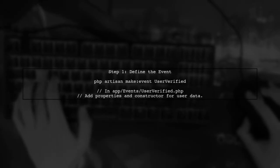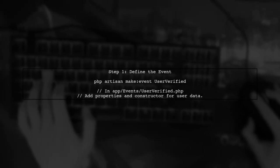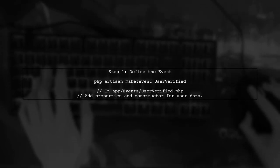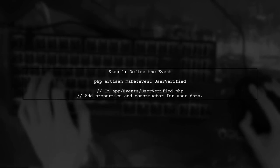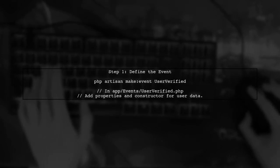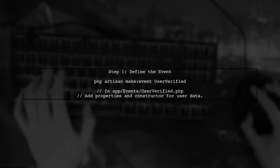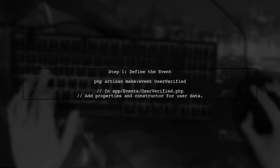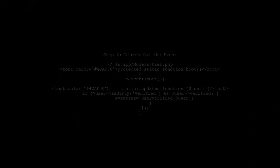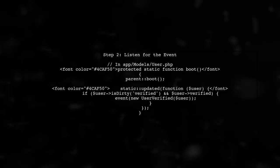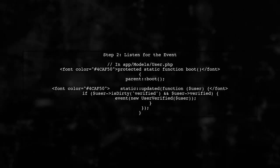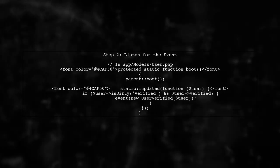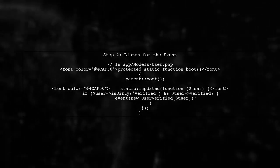To fire an event when a specific column in the user's table changes, we will utilize Laravel's model events. First, we need to define an event that will be triggered when the verified column is updated. Next, we will listen for the model's updated event in the User model. This will allow us to check if the verified column has changed to True.